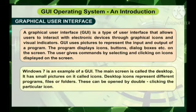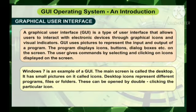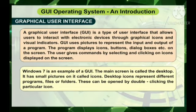Windows 7 is an example of a GUI. The main screen is called the desktop. It has small pictures on it called icons. Desktop icons represent different programs, files or folders. These can be opened by double clicking the particular icon.